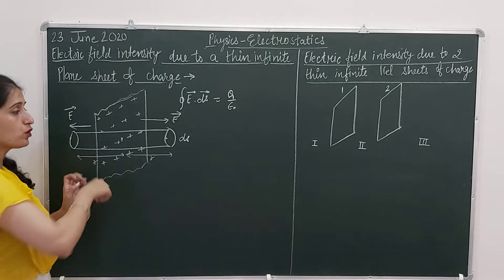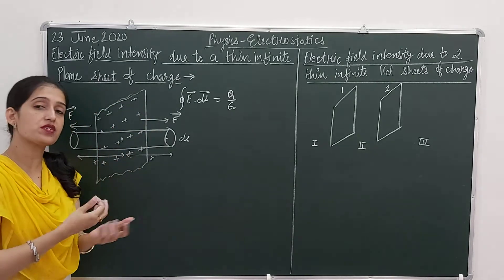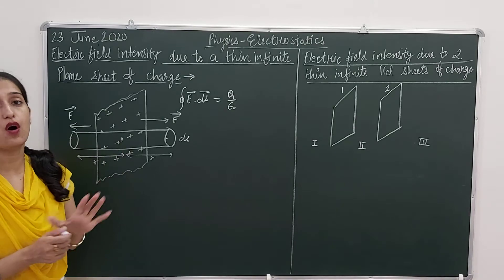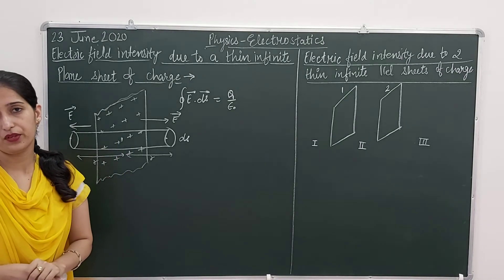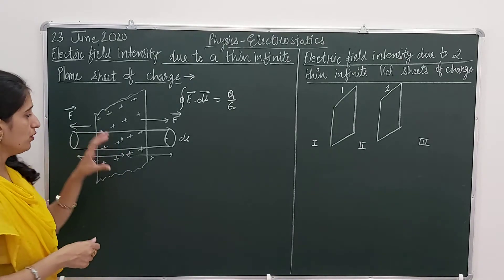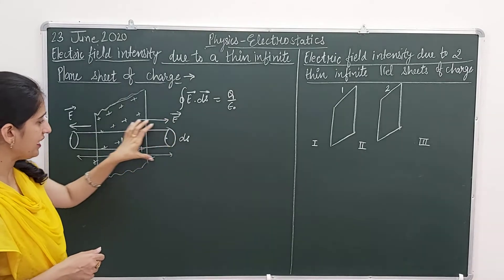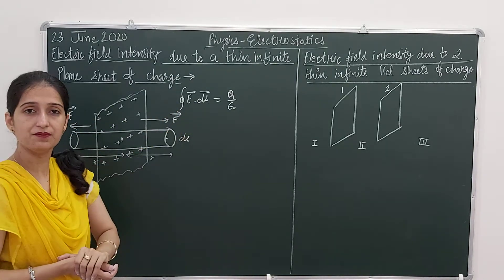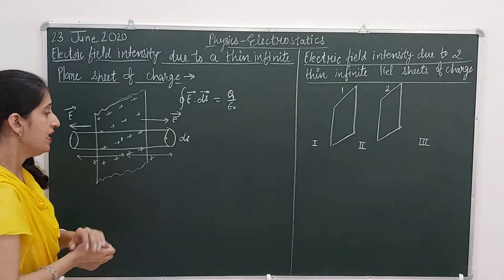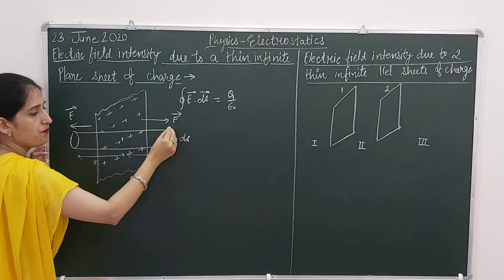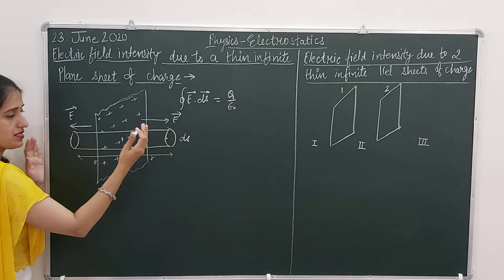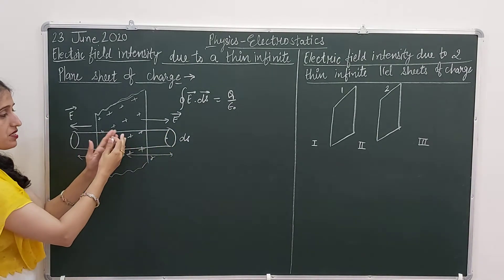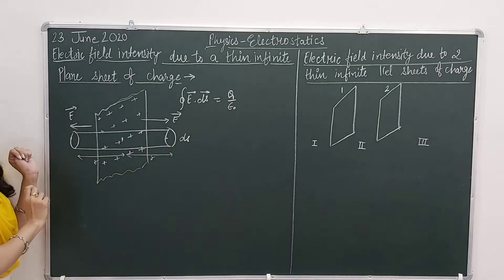Why are we not choosing a spherical surface as we have in previous topics? Because the sheet is of infinite size. To get a finite shape — because we need to find that area — I am choosing a symmetric cylinder which is symmetric on both sides of the sheet.